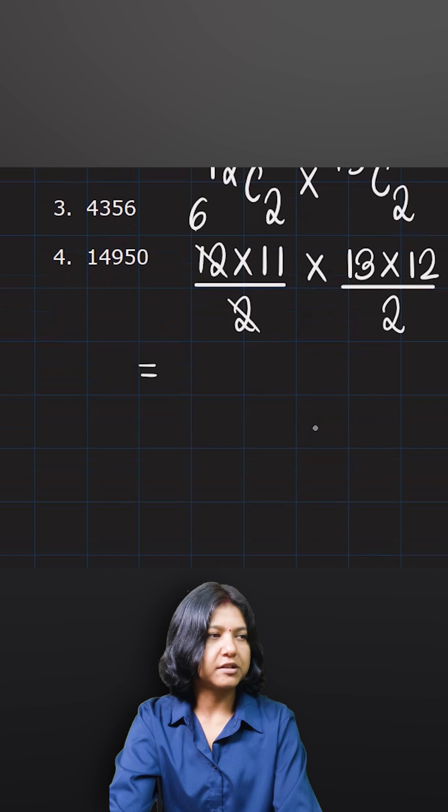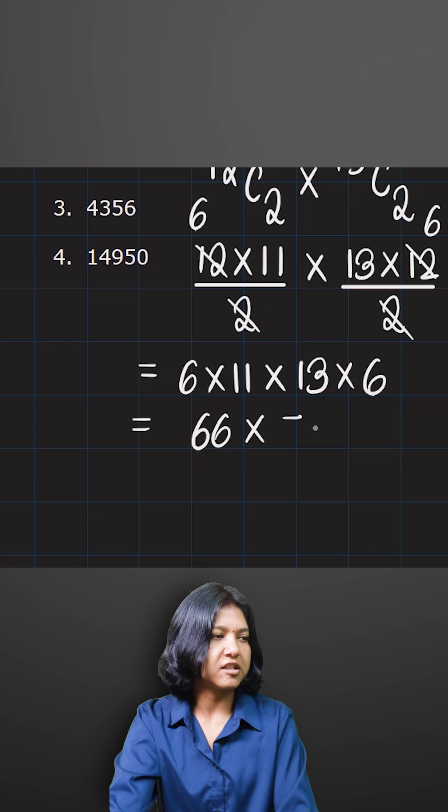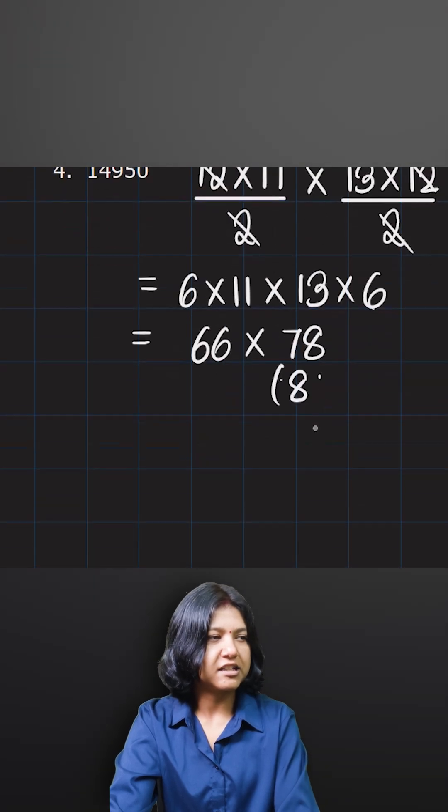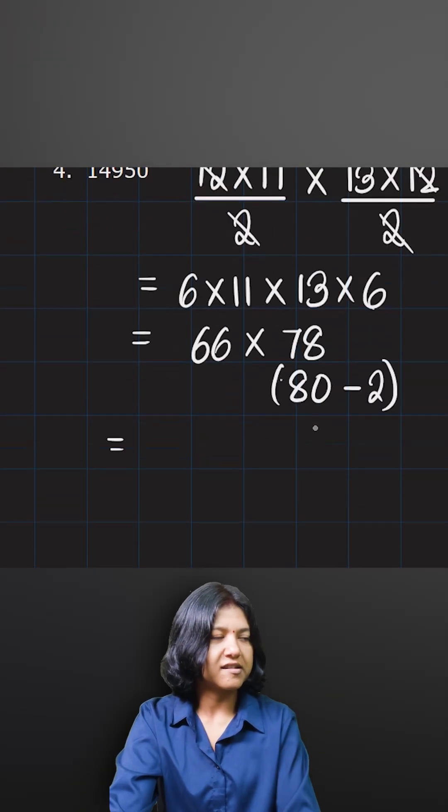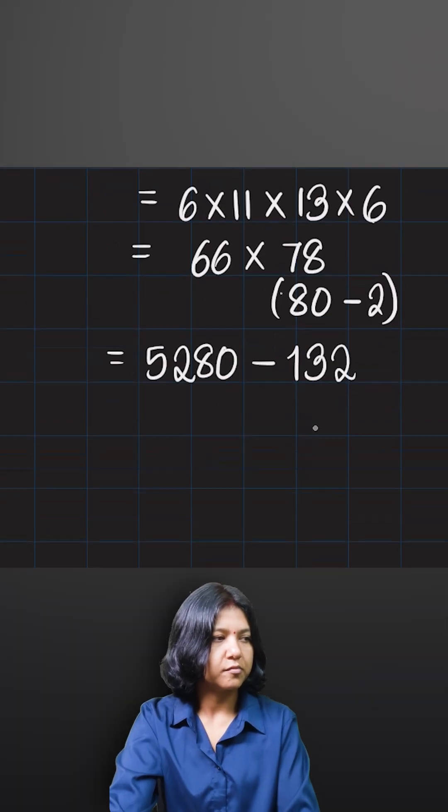2 times 6 is 12. 2 times 6 is 12. 6 times 11 times 13 times 6. 66 times 78. I know 78 can be represented as 80 minus 2. So 66 times 80. I can do that quickly. 66 times 2 is 132. Please subtract.